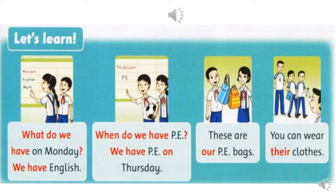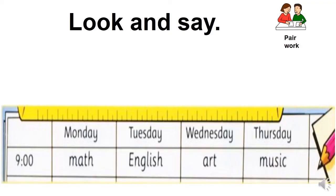Then let's read. The first question, the second question — two questions. Let's read the next question. I read. What do we have on Monday? Look and say. What do we have on Monday? How do we have on Monday? Wednesday, Tuesday, Thursday.